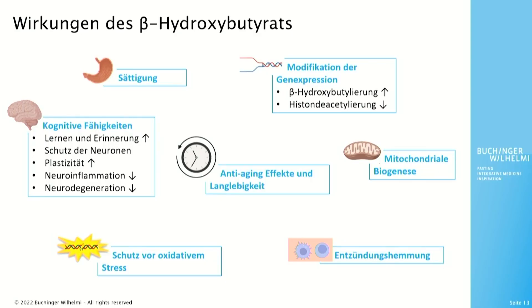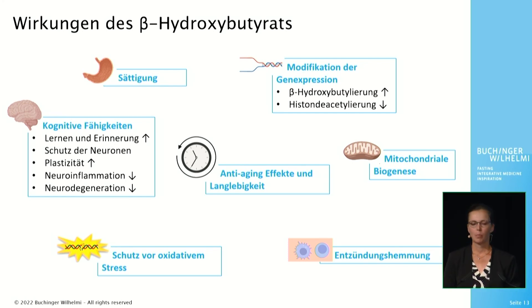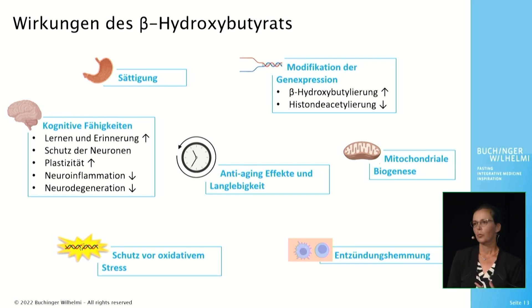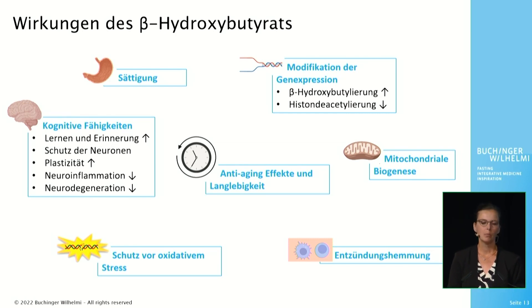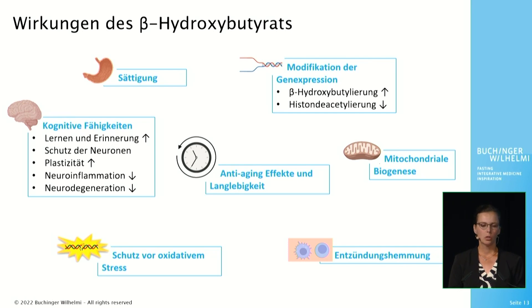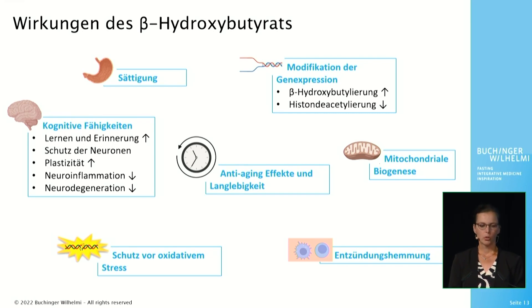Beta-hydroxybutyrate is not only an energy supplier. It has been shown to have numerous positive effects in cell and animal models. It leads to satiety and improves cognitive abilities such as learning and memory. It protects neurons, promotes plasticity, and decreases neuroinflammation and neurodegeneration. In addition, beta-hydroxybutyrate modifies gene expression through beta-hydroxybutylation and reduction of histone deacetylation, so that protection against oxidative stress is increased, inflammation is inhibited, and mitochondrial biogenesis is increased. Overall, beta-hydroxybutyrate leads to anti-aging effects and positively influences longevity.